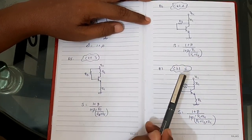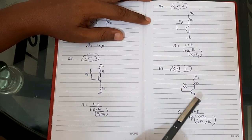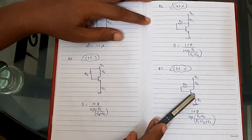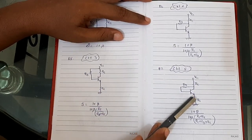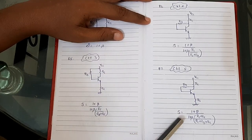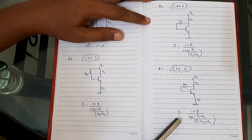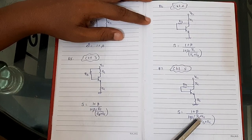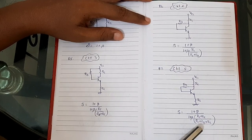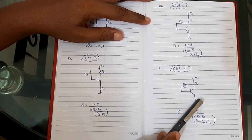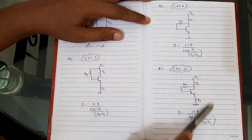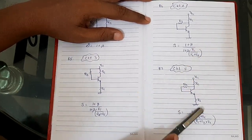Circuit 5 (similar to Circuit 4 but with an emitter resistor RE to ground): Stability S = (1+β) / [1 + β·(RC + RE) / (RC + RB + RE)]. The presence of the emitter resistor can be felt in the formula when comparing to Circuit 4.